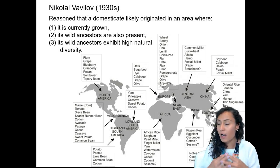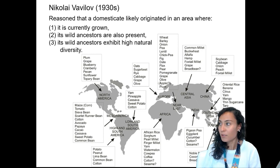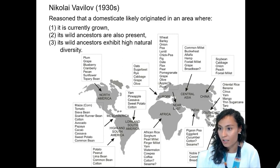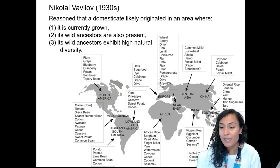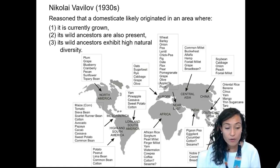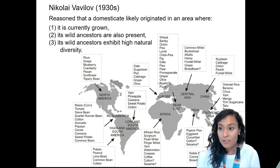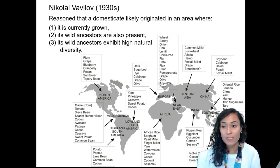One of the major contributions of Vavilov's research was to point out the various different ways in which domestication likely occurred. He reasoned that a domesticate likely originated in an area where it is currently grown naturally, its wild ancestors are also present, and its wild ancestors exhibit high natural diversity.